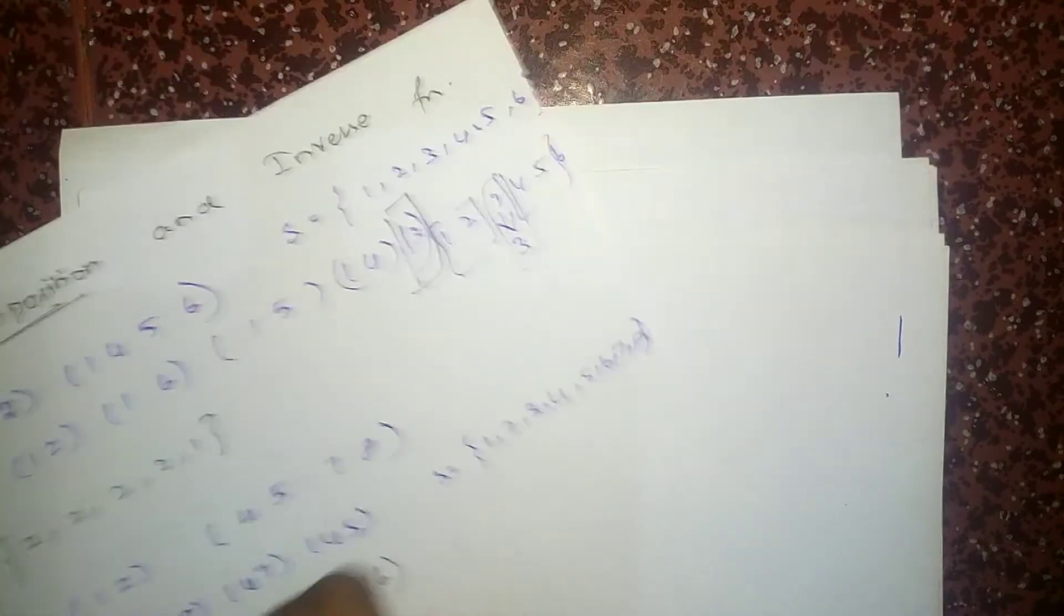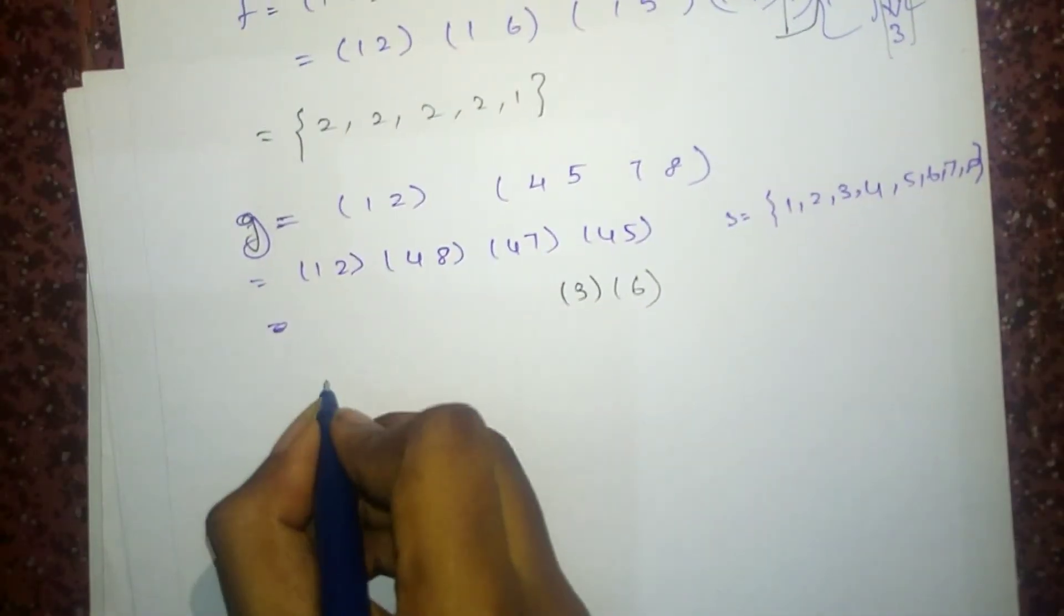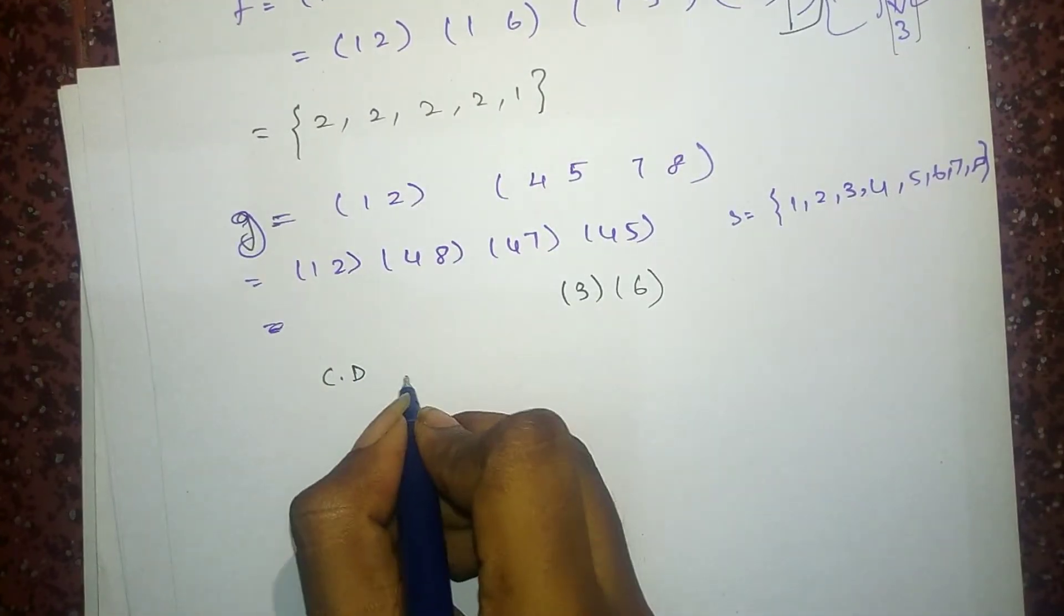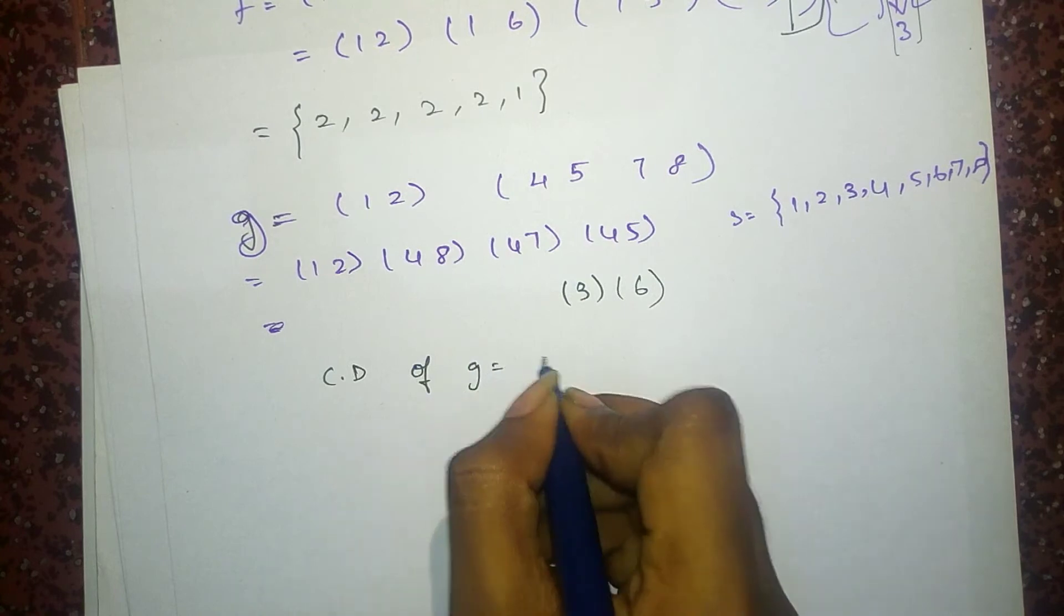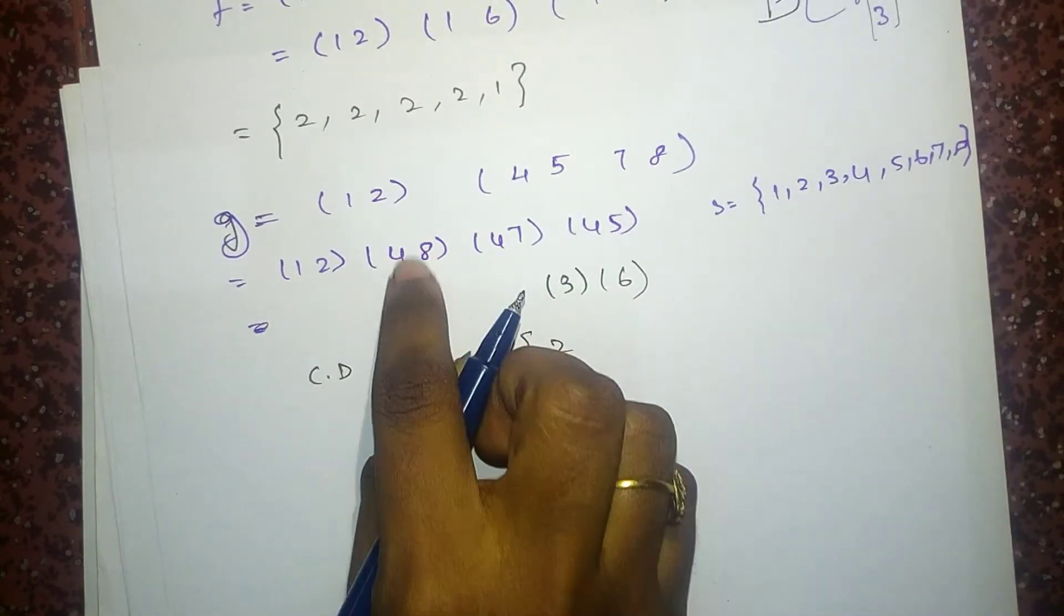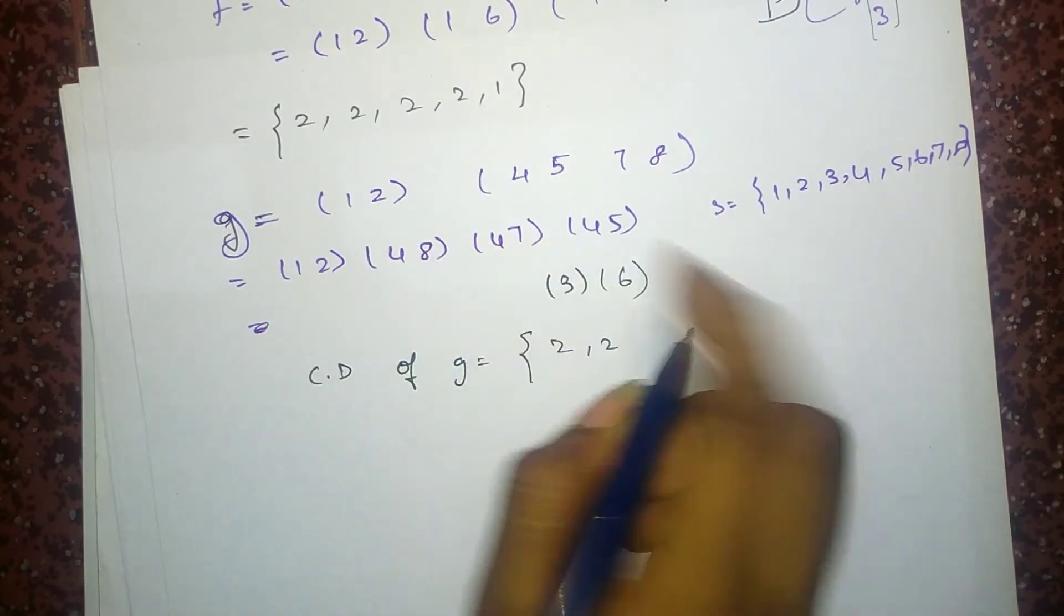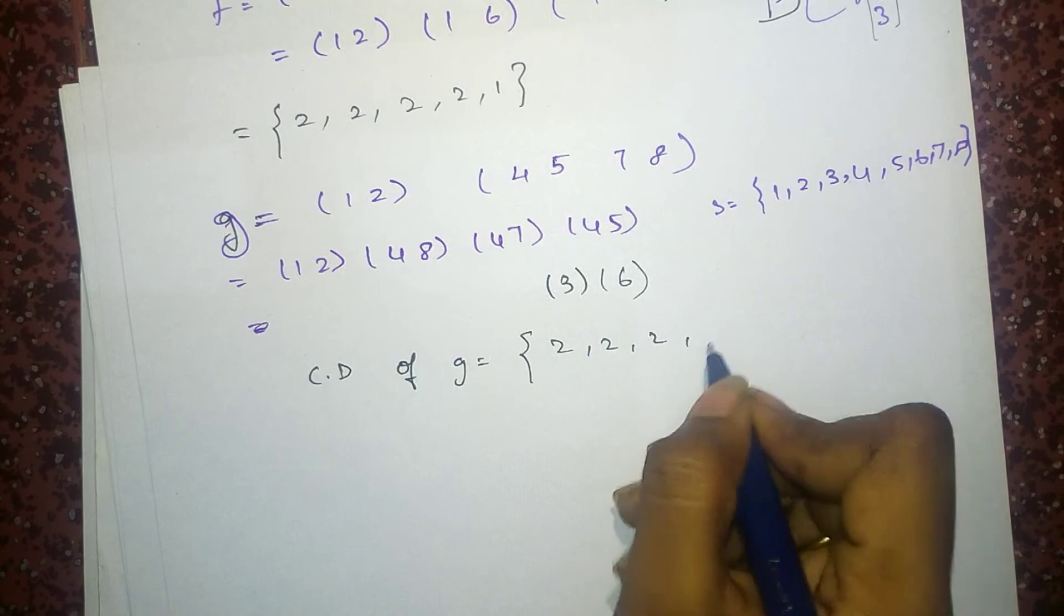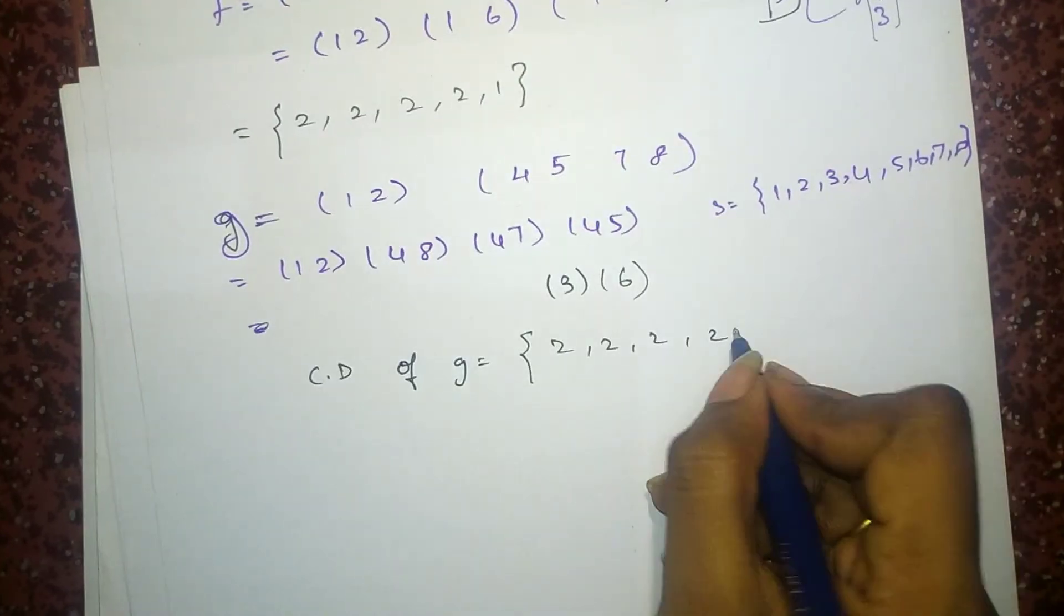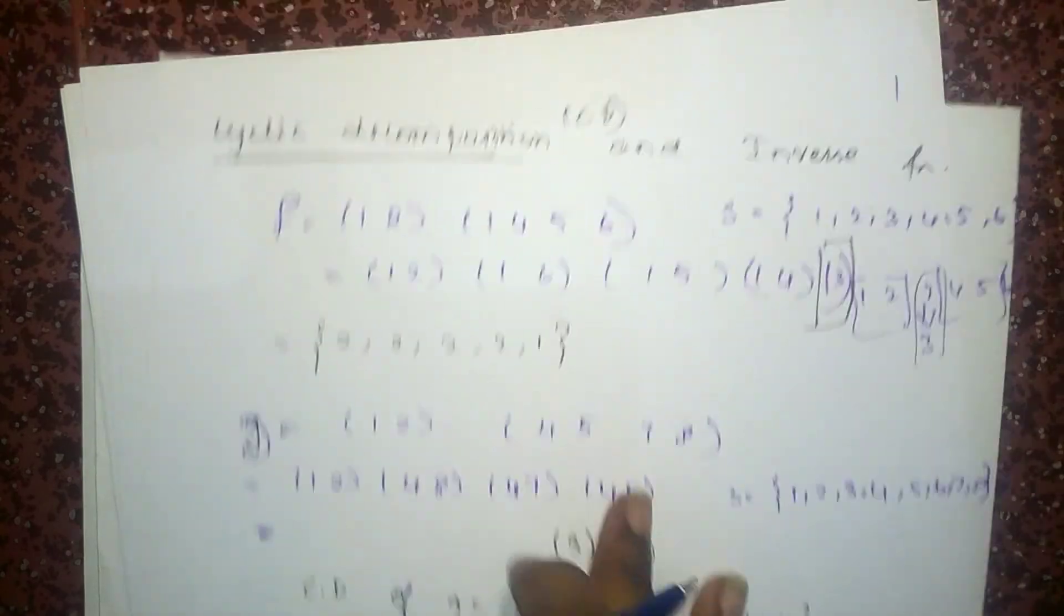So the cyclic, I will represent this in a short form like CD. Okay. So CD, cyclic decomposition of G is equal to: 2, 2, 2, 1 more 2, and finally, 1 and 1. That's it, the cyclic decomposition.